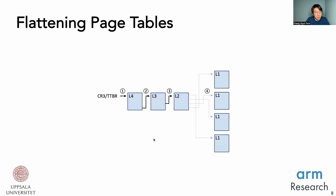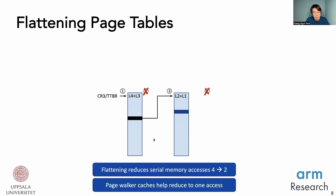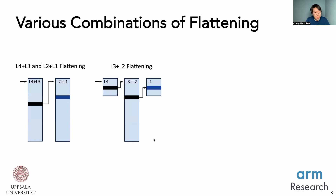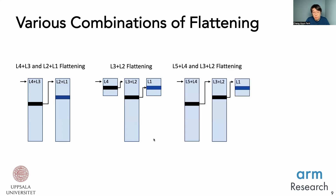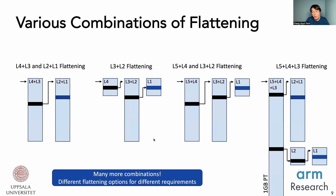We flatten both the leaf nodes and the root nodes, letting us skip two of the memory accesses required. In practice, page walk caches can skip the first memory access for the root node, resulting in one memory access in practice. There are various combinations of flattening: we can flatten two middle levels, or with five-level page tables, flatten the first two and the next two levels, or even allocate a 1GB page table and flatten three levels. Ultimately, it comes down to which flattening combination is best at a given moment.